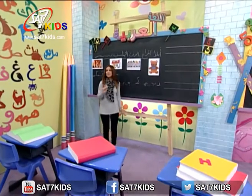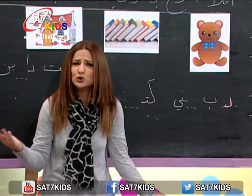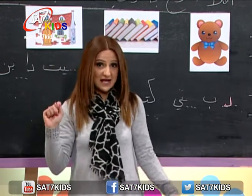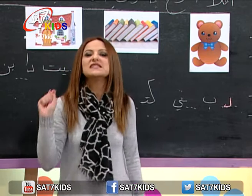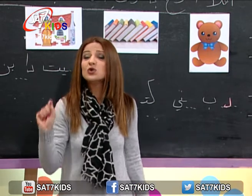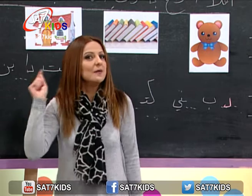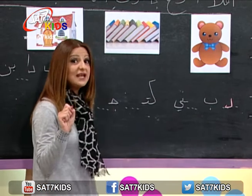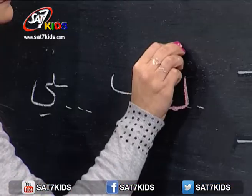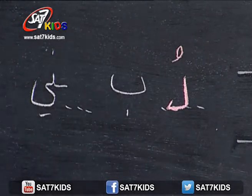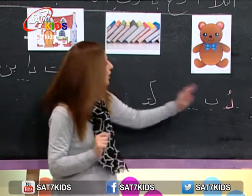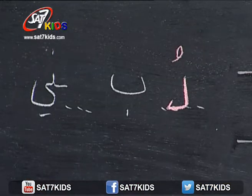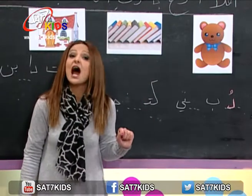منسمع دا، منسمع دو، منسمع دي؟ يعني منسمع الحرف مع الأصوات الطويلة؟ لا، منسمعه مع الأصوات القصيرة. أي صوت؟ نرجع منسمع منيح: دب. أي صوت؟ صح، الضمة. ونكتب فوق. وصار عنا دب.